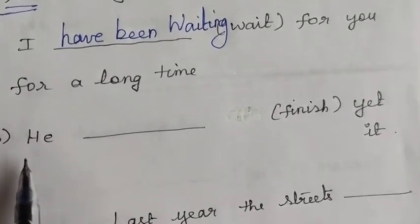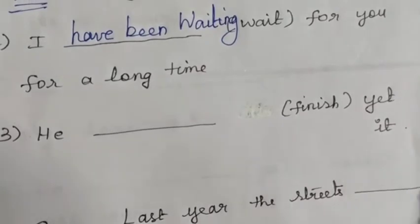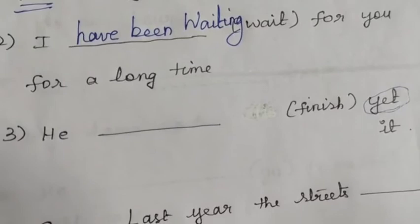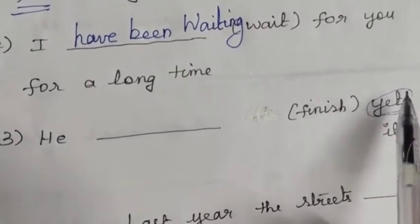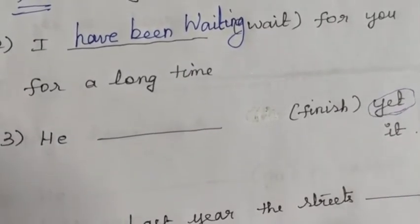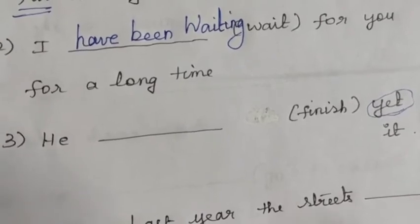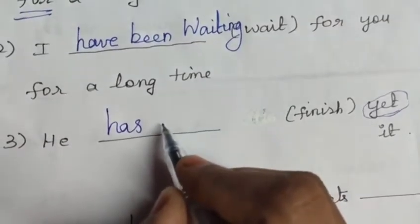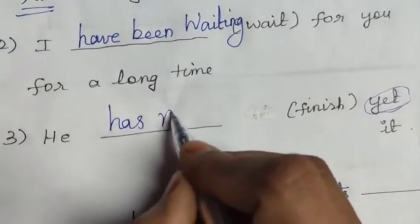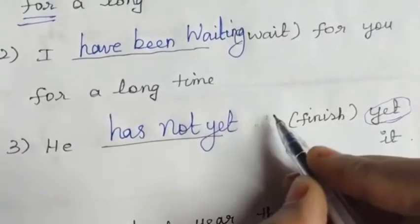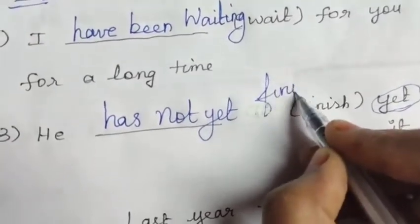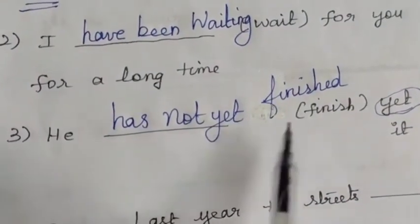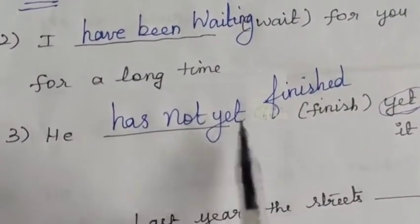Next exercise: 'He dash finish yet it.' When 'yet' comes, we use present perfect tense. 'He' is singular, so 'has'. With 'yet', we add 'not': 'He has not yet finished it.'